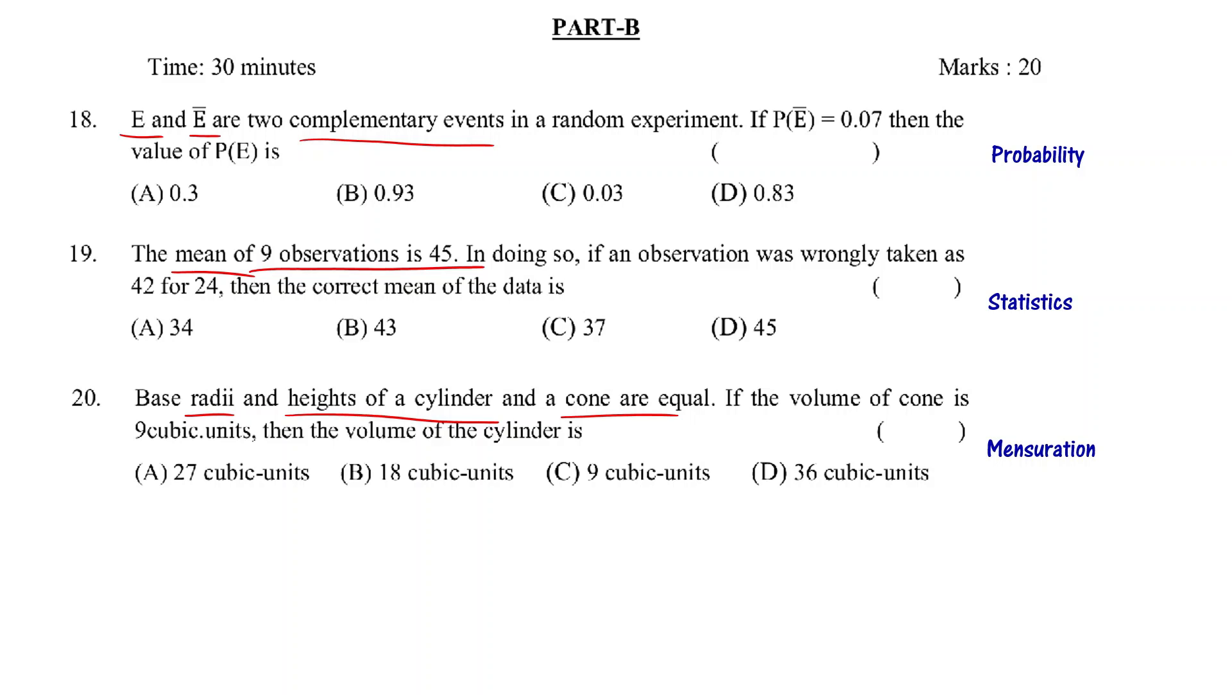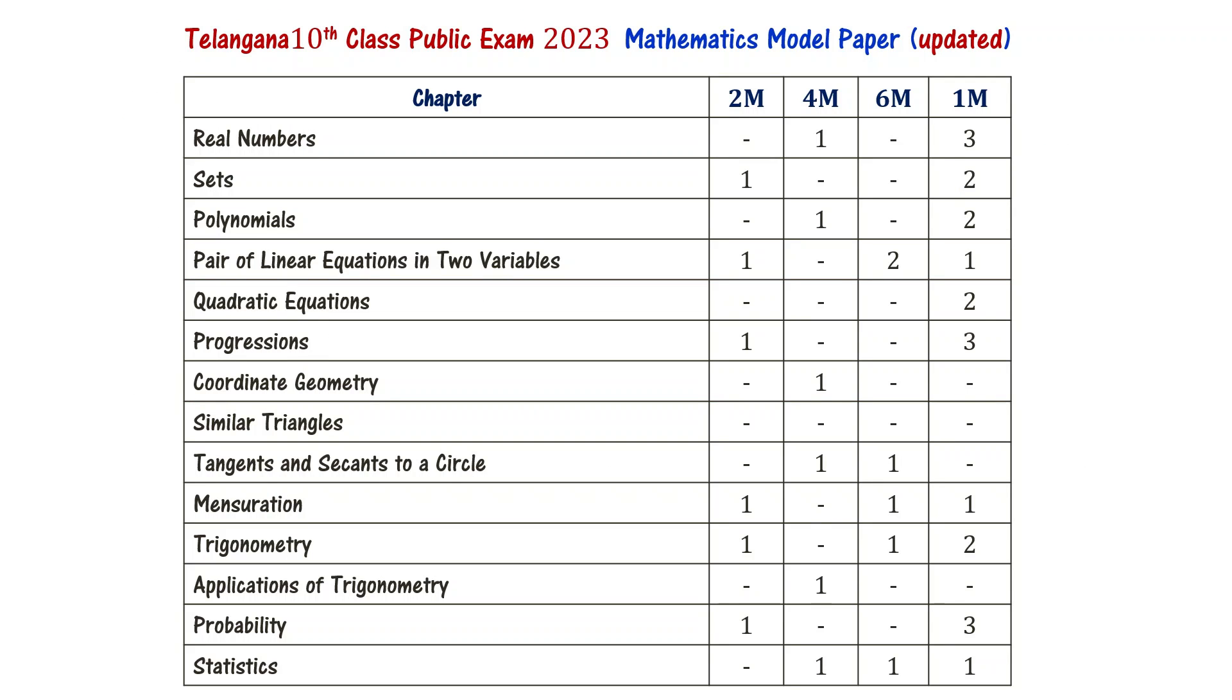Now let's look at the full paper distribution. 10th class public exam model paper 2023, maths, updated pattern. Real numbers chapter, 4 marks and 1 mark, 3 questions. Sets chapter, 2 marks and 1 mark, 2 questions. All chapters have this distribution. But interestingly, similar triangles, there are none. And pair of linear equations in two variables, there are many. But exact distribution is not followed, there are some variations. Please remember, similar triangles is a very important topic. Try to learn as much as possible.